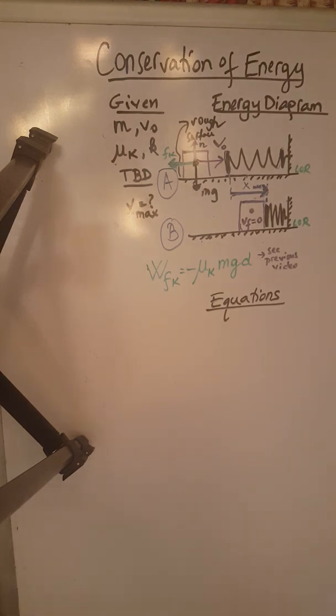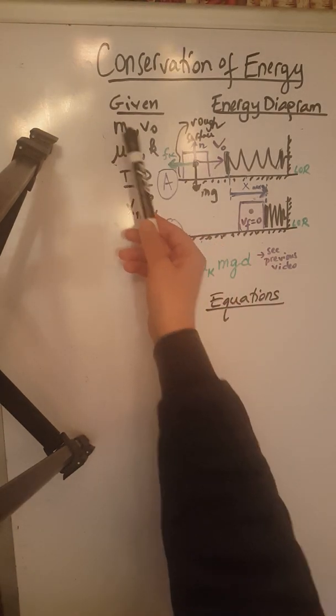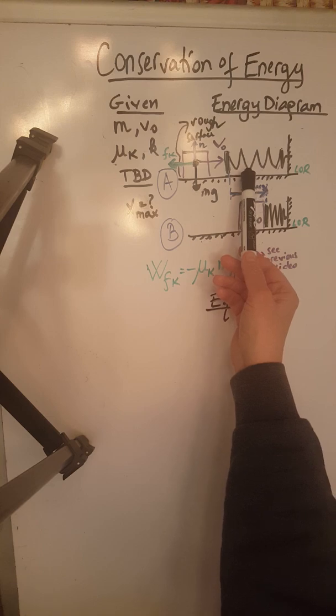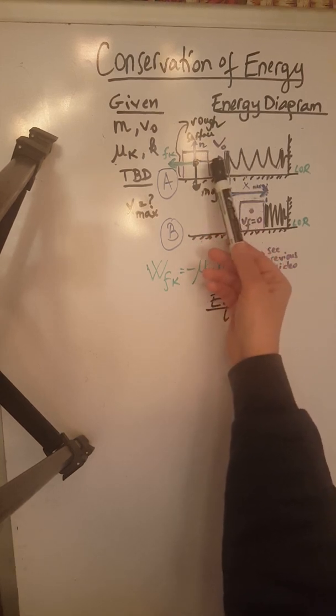So this is another conservation of energy problem in which we have an object of mass m moving towards a spring at a speed v0, velocity v0.